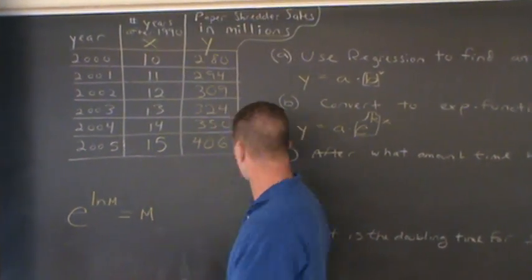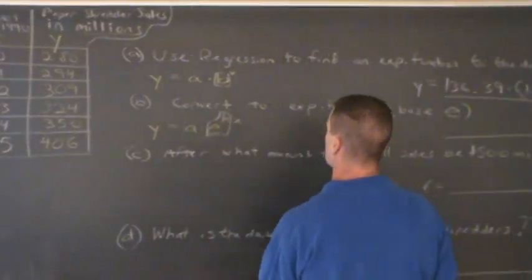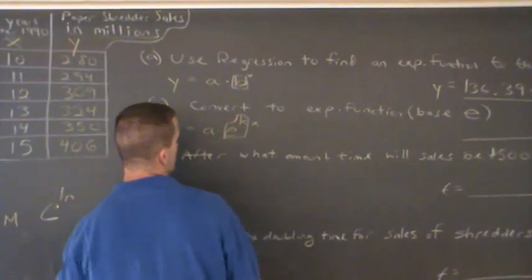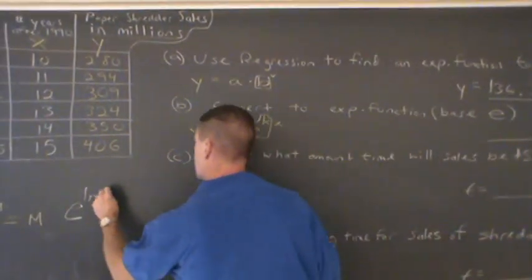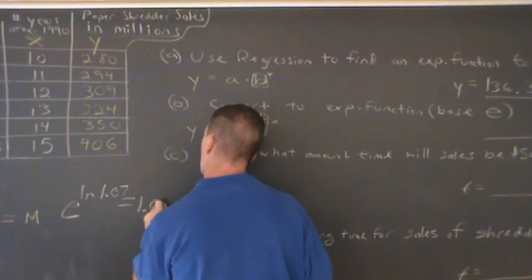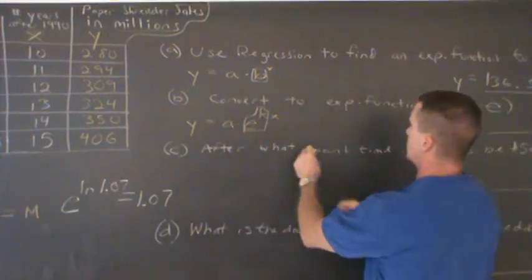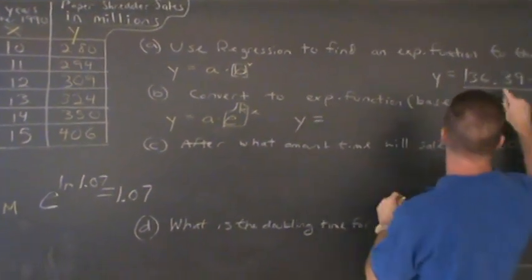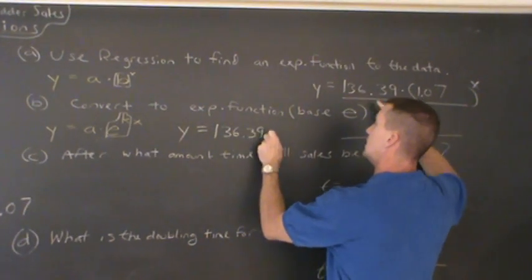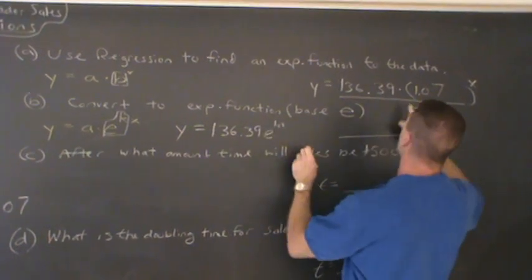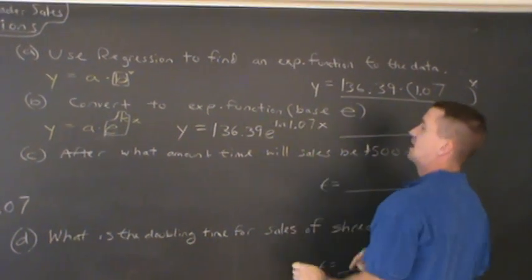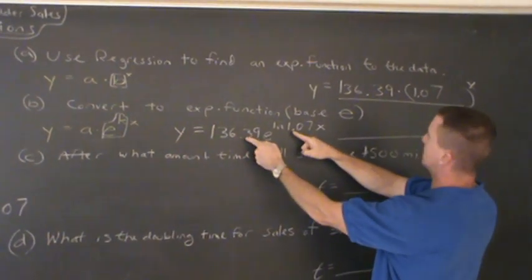What I can do is, everyone, I can think, e to the ln of, let me go over here. See, that was 1.07. e to the ln of 1.07, everyone, would equal 1.07. This is true. So, in this step, I'm gonna write this as y equals, I'm gonna write this same value for a, 136.39 e to the ln of 1.07x. And everyone, this is the same thing as this.